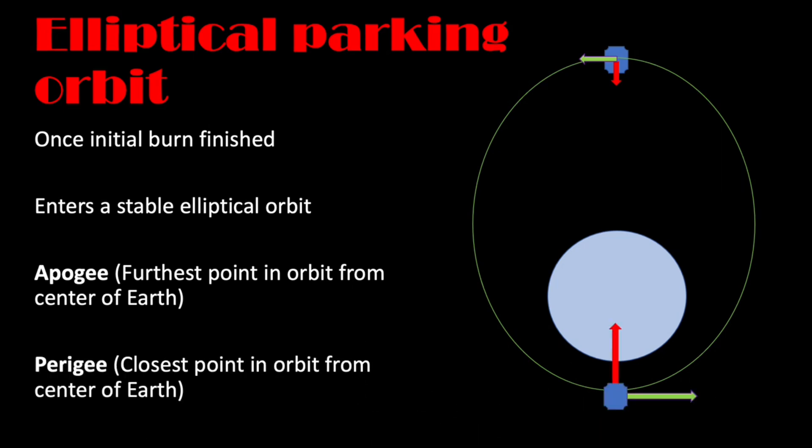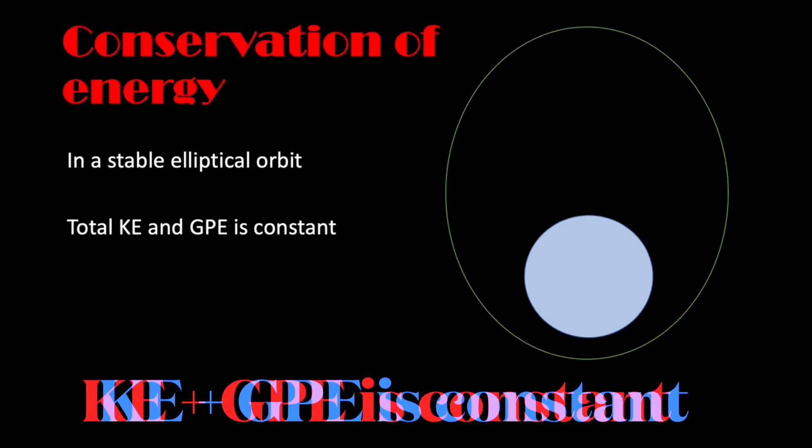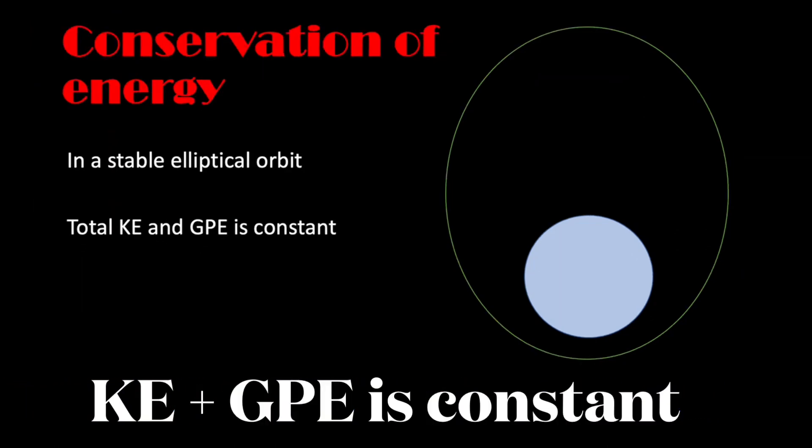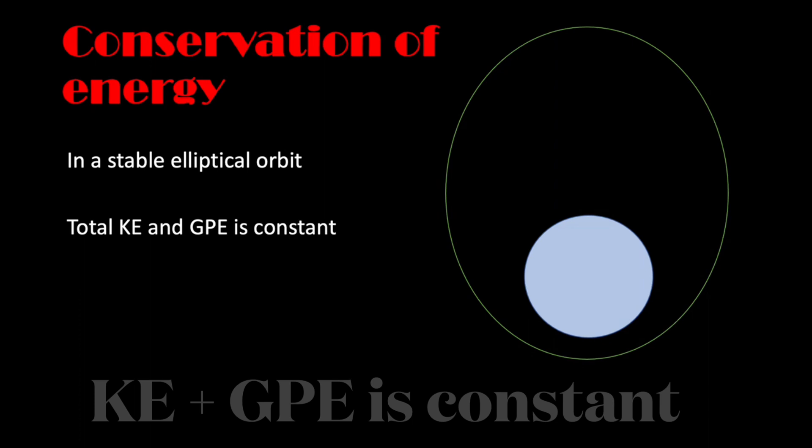Now in this stable orbit, the total kinetic energy and gravitational potential energy are constant. You add them up, and it's constant.